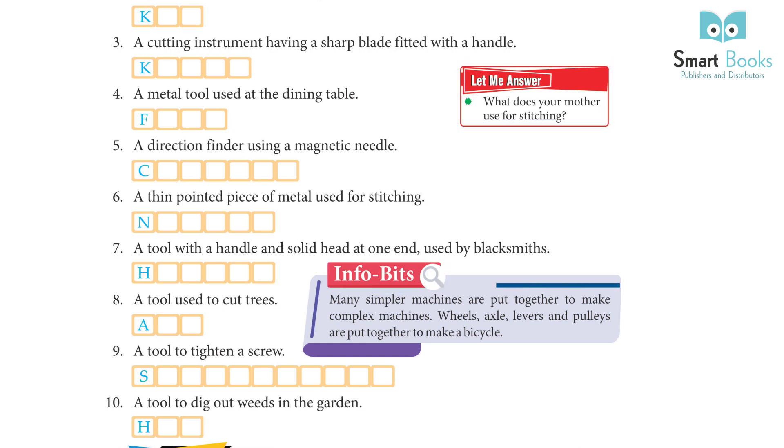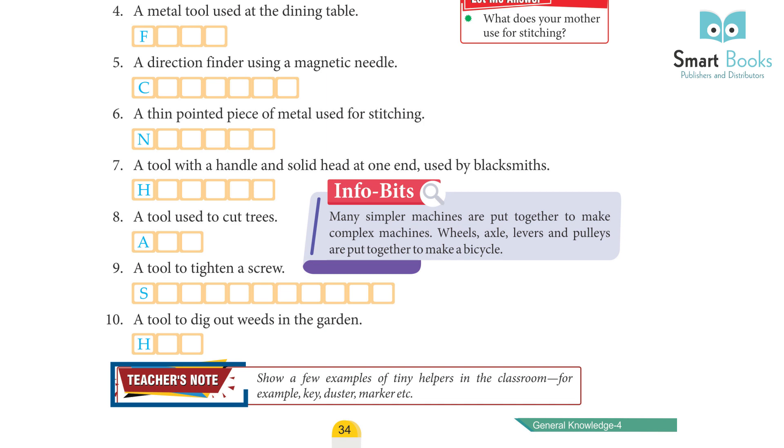Info Bits. Many simpler machines are put together to make complex machines. Wheels, axle, levers and pulleys are put together to make a bicycle.